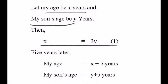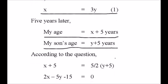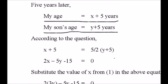After five years, my age is X plus 5 and my son's age is Y plus 5 years. According to the question, X plus 5 equals 5 by 2 times Y plus 5.